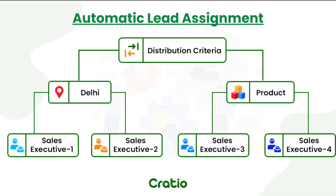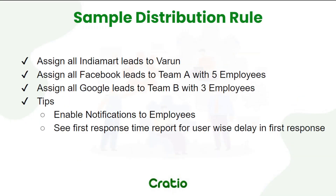These distribution rules can be written for your business. It could be based on lead source, location, product, or any conditions. I will take some sample conditions and explain how to set up distribution rules. Once you learn this, you can configure for any other type of rules that may come for your business. The first scenario: leads coming from IndiaMart as a source.